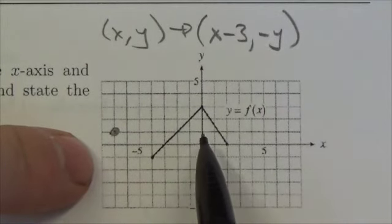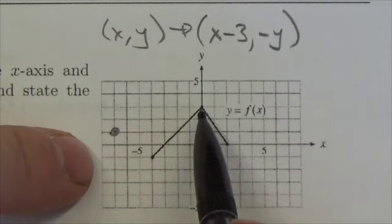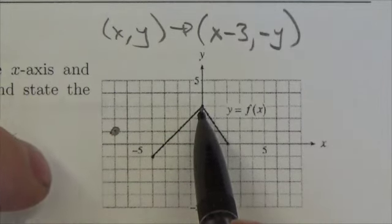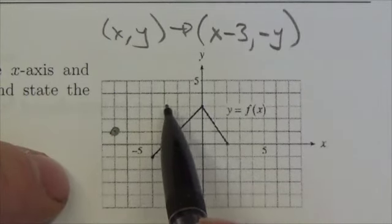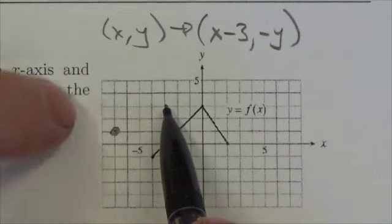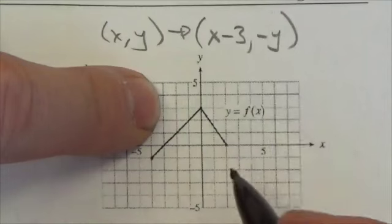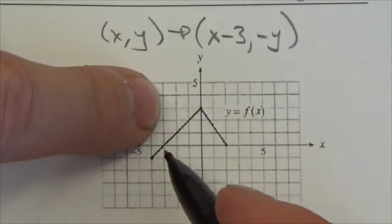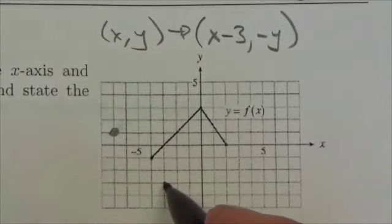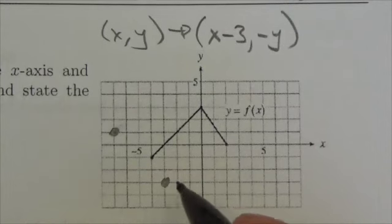This point over here was zero, three. Well, three to the left—one, two, three—zero minus three. And this was up at positive three, but now that's going to change signs, so it's gonna go down to negative three.